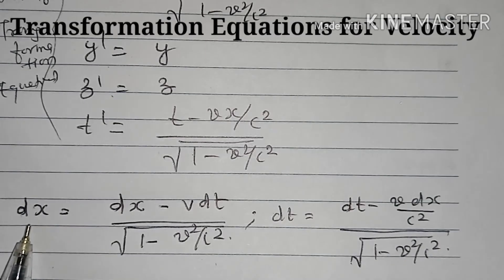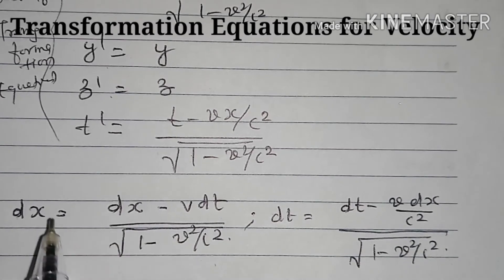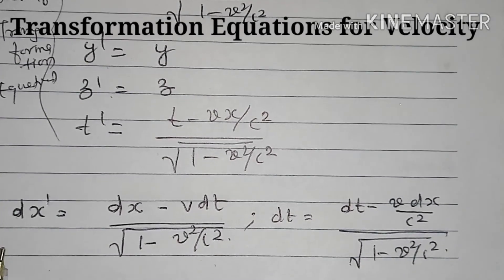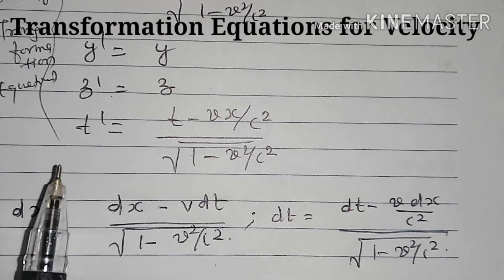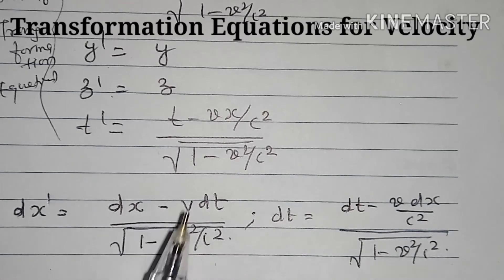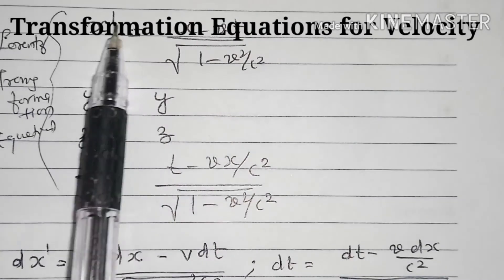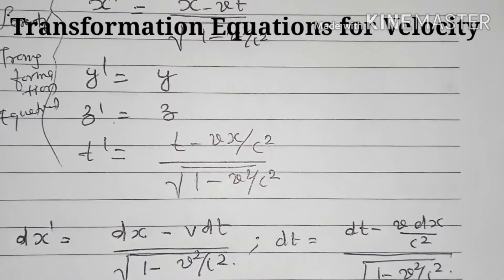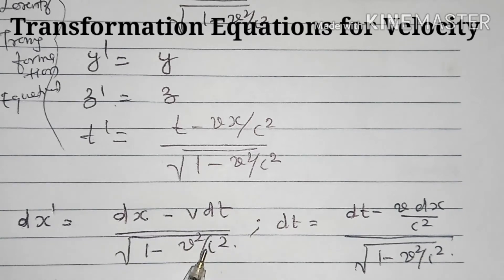We take the derivative on both sides of the X dash equation. So we have dX dash is equal to dX minus V dT, divided by the square root of 1 minus V squared by C squared. The denominator is a constant term, so it remains as is.